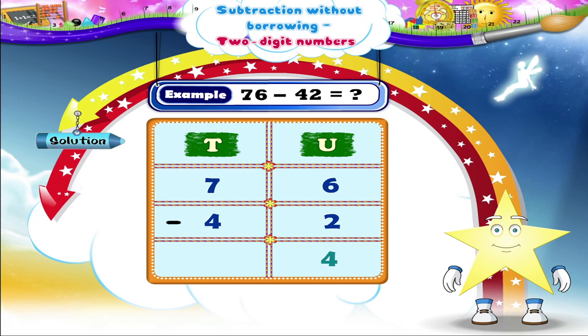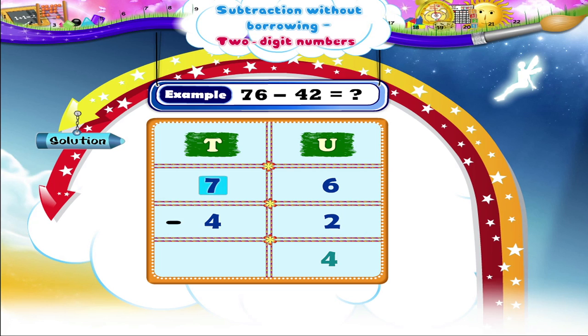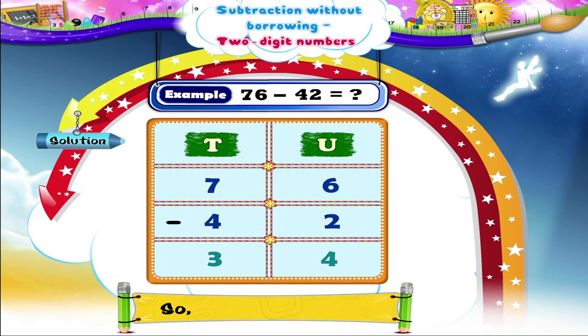What should we do next, Starry? Yes, let's subtract 7 tenths minus 4 tenths. We get 3 tenths. So, 76 minus 42 equals 34.